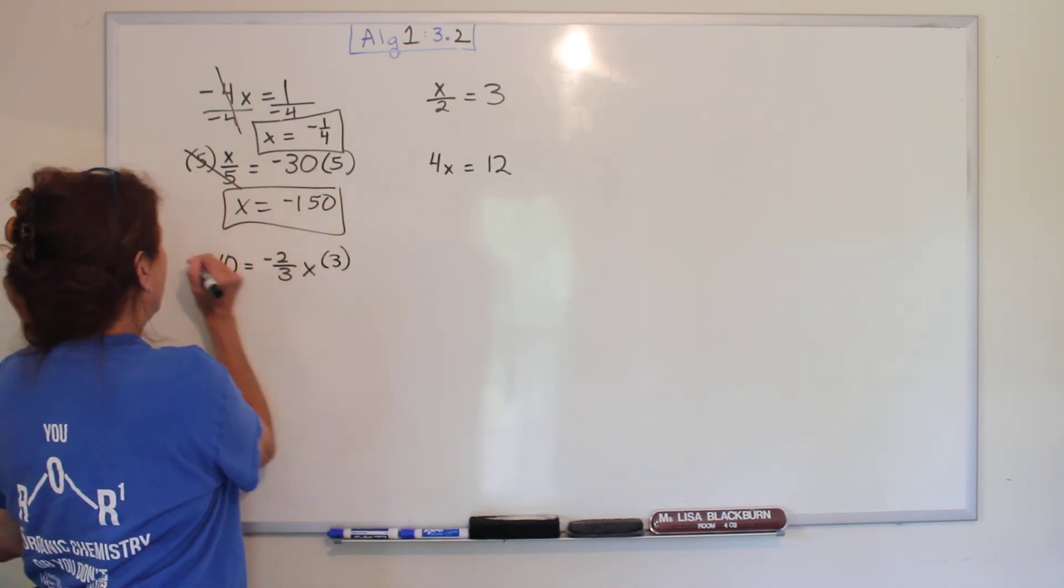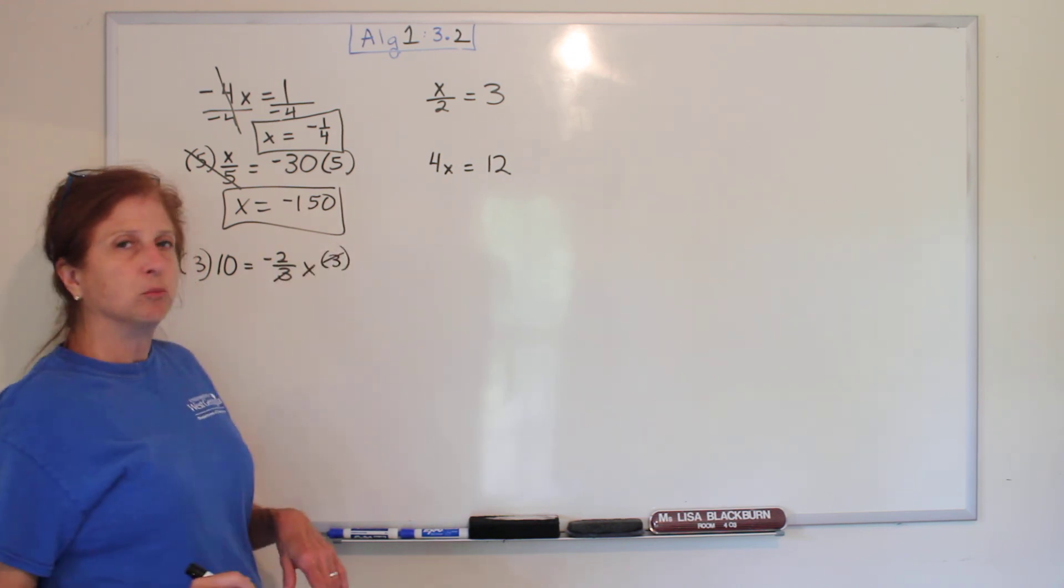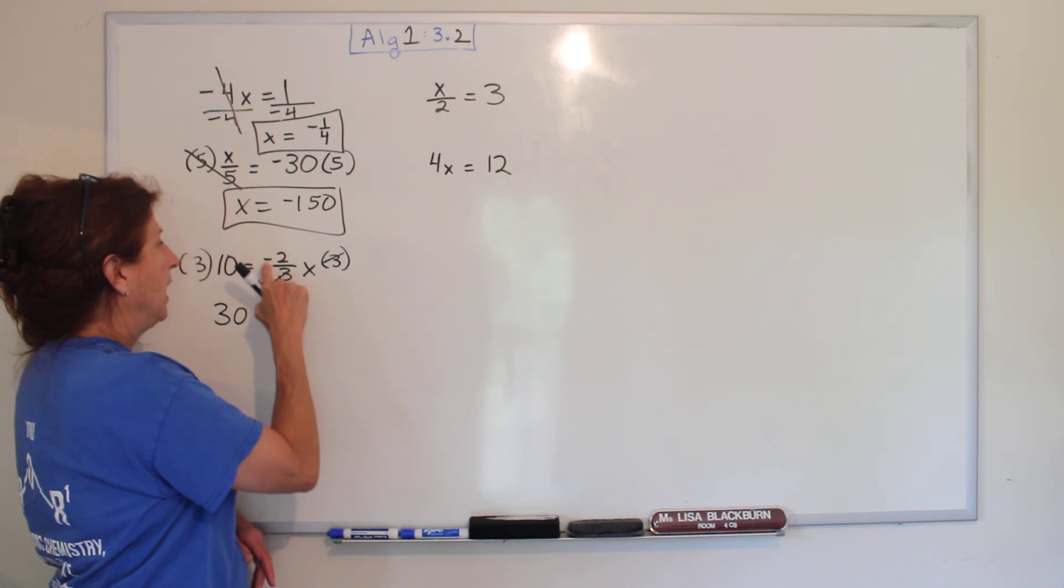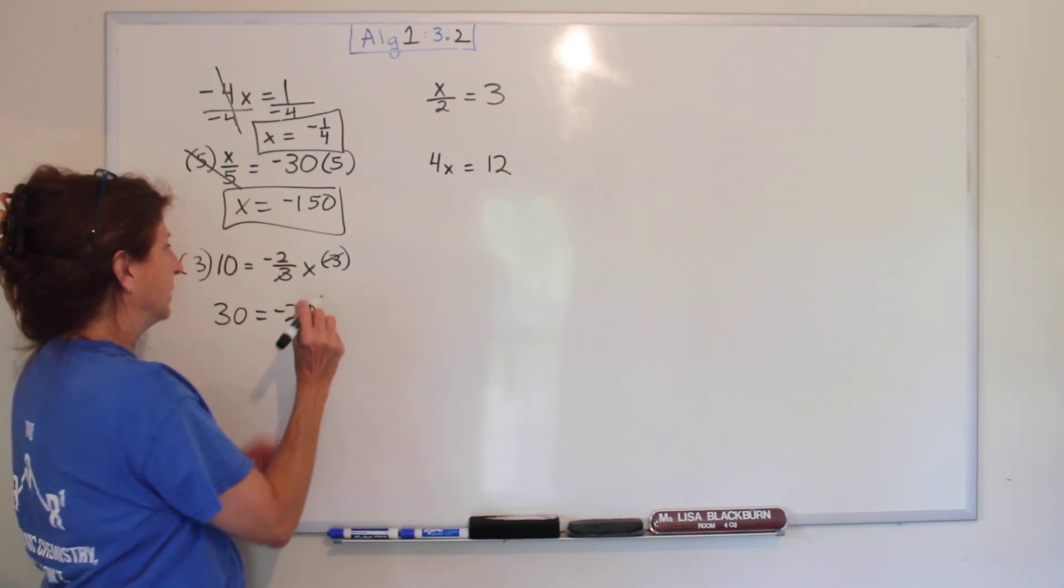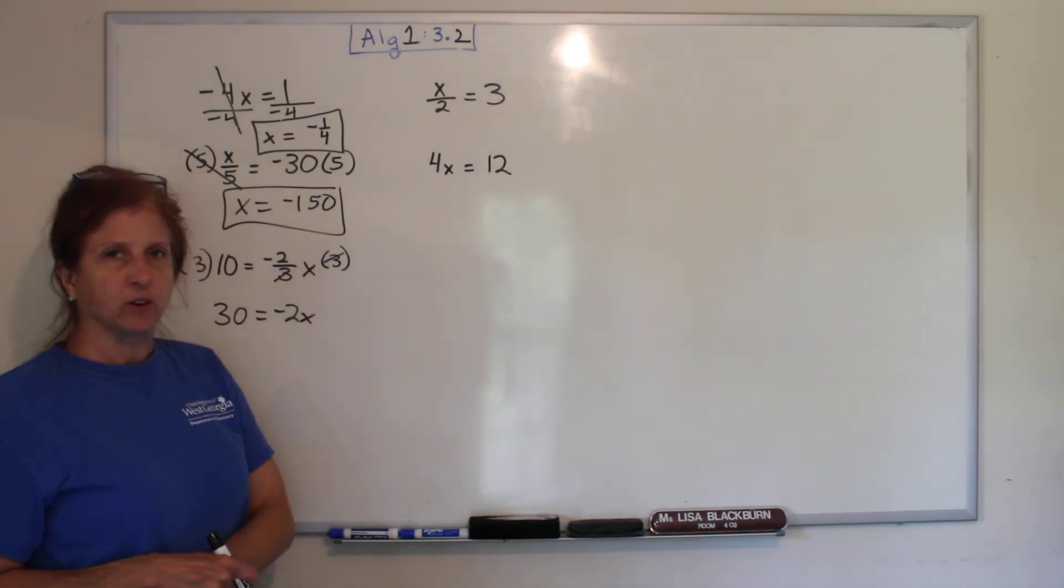So I'm going to multiply both sides by three. What you do to one side, you do to the other. These threes mark out three times 10 is 30. Bring down what I didn't mess with. That two is in numerator land. X is in numerator land. I can write them like that.